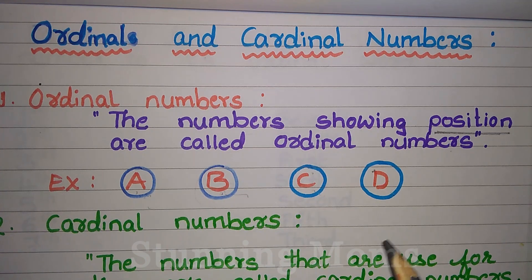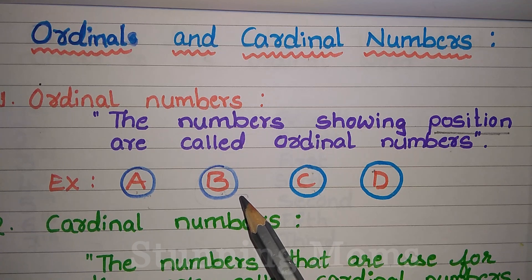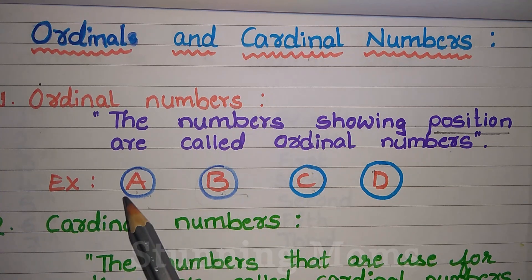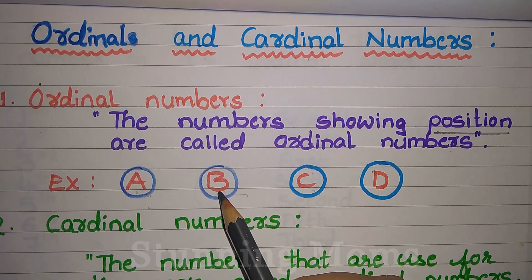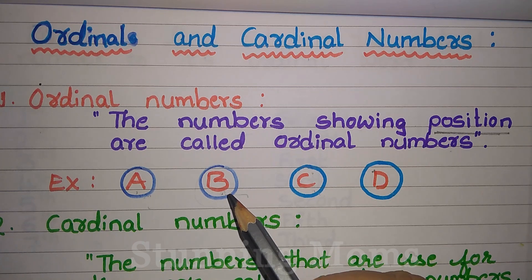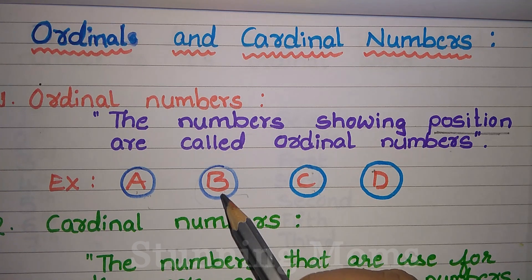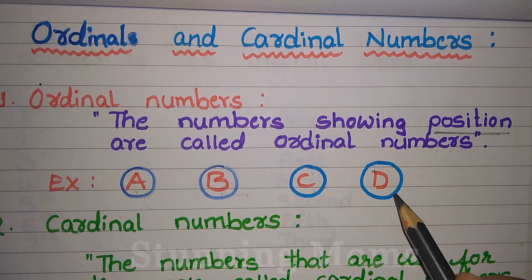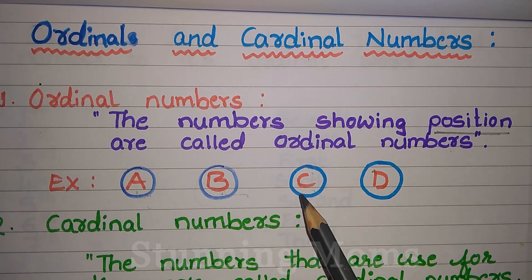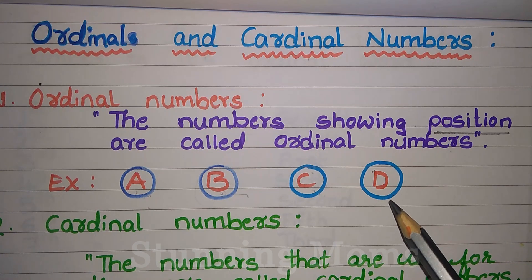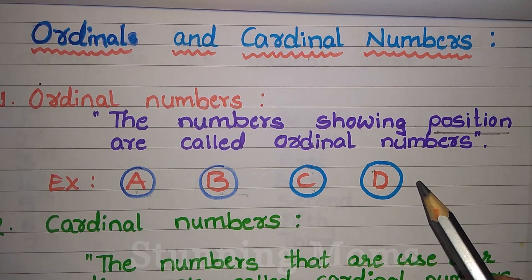Here I have A, B, C, D. It is the first position, it is the second position. Two position means D is the fourth position. Fourth position. Fourth is different than the number four.